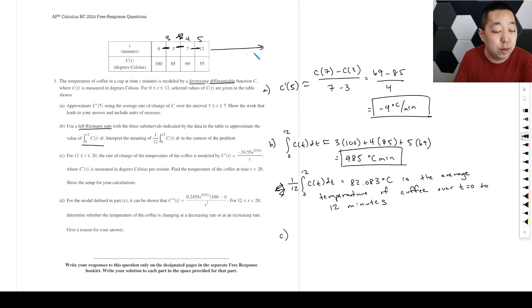For 12 to 20, beyond this time interval, the rate of change is modeled by this. Find the temperature of the coffee at time T equals 20 and show the setup for your calculation. If I want the actual temperature and I have the rate of change, then we know the integral over this is going to be the change in the temperature. The integral of the rate—this is the fundamental theorem of calculus—the integral of the rate is going to give you the change. So that means the integral from 12 to 20 of C prime of T, and that's literally going to be C(20) minus C(12). We know C(12) is 55.